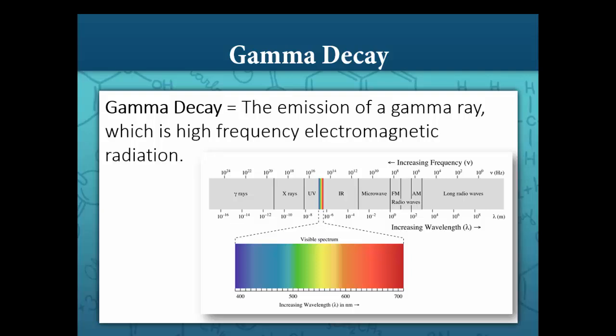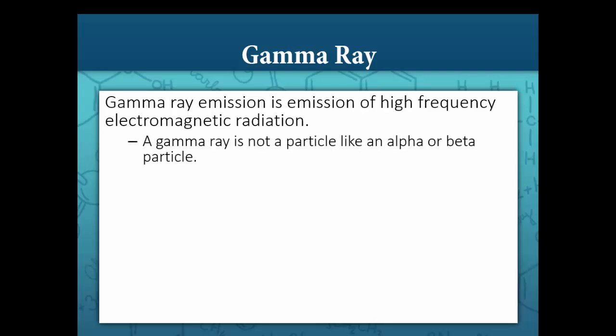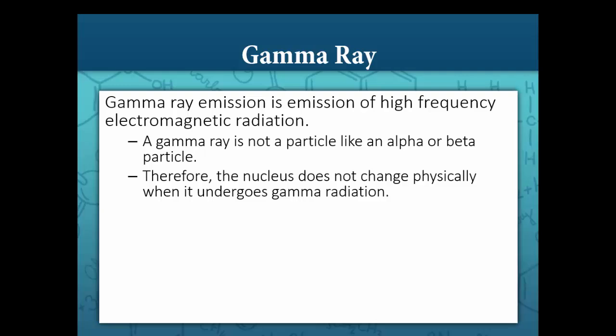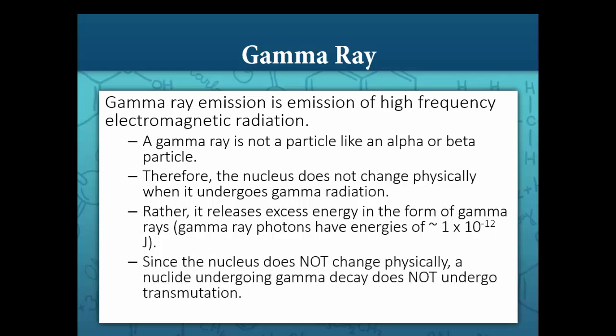Finally, let's consider gamma decay. Unlike alpha and beta decay, gamma decay is the emission of energy, not a particle. Gamma decay is the emission of a gamma ray, which is high-frequency electromagnetic radiation. On the electromagnetic spectrum, gamma rays are higher energy than x-rays, which are higher than ultraviolet light, which is higher than visible light. Since a gamma ray is not a particle, the resulting nucleus is not changed physically — it releases excess energy in the form of gamma rays, with photon energies of approximately 1 times 10 to the negative 12 joules. Therefore, gamma decay does not result in transmutation, and we do not need to write gamma decay nuclear equations.